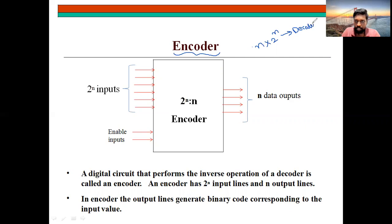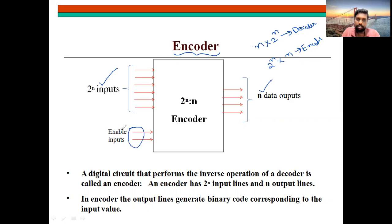What is the reverse operation? It will take 2 power n inputs and it will give n number of outputs — that is your encoder. The reverse operation of decoder is encoder. So here you are having 2 power n number of inputs dedicated to n number of outputs. There are also special enable inputs which are required to either turn on or off the circuit.